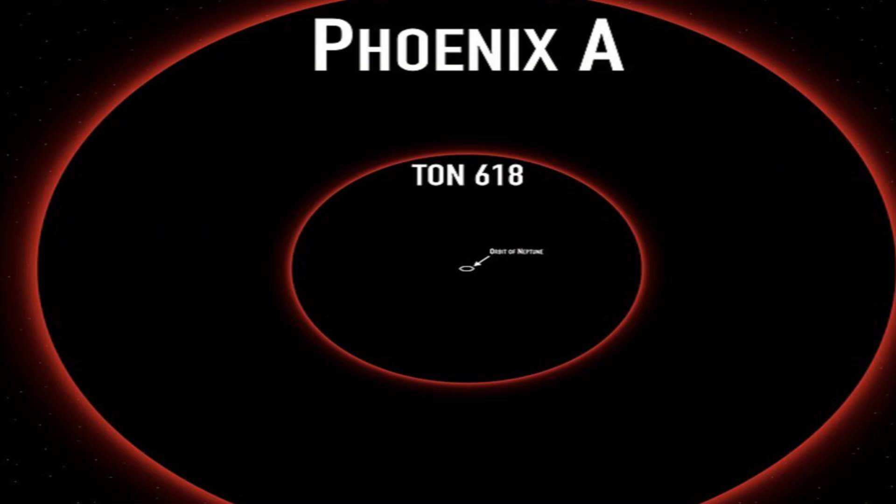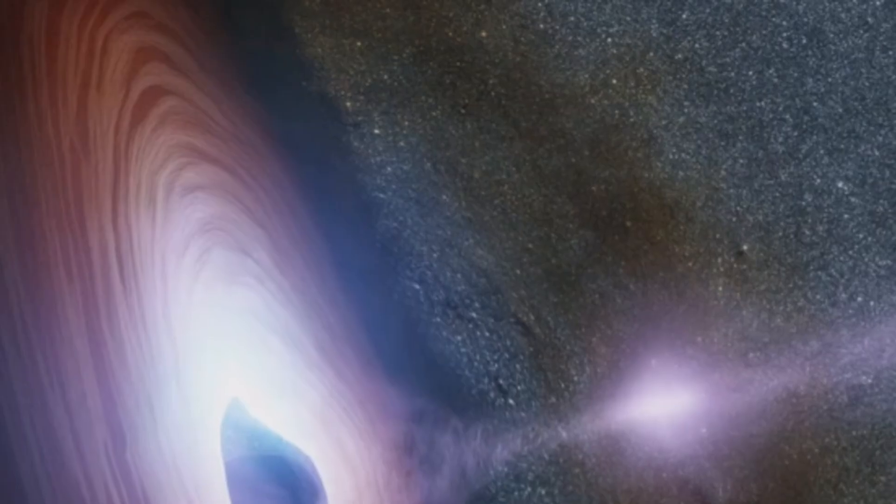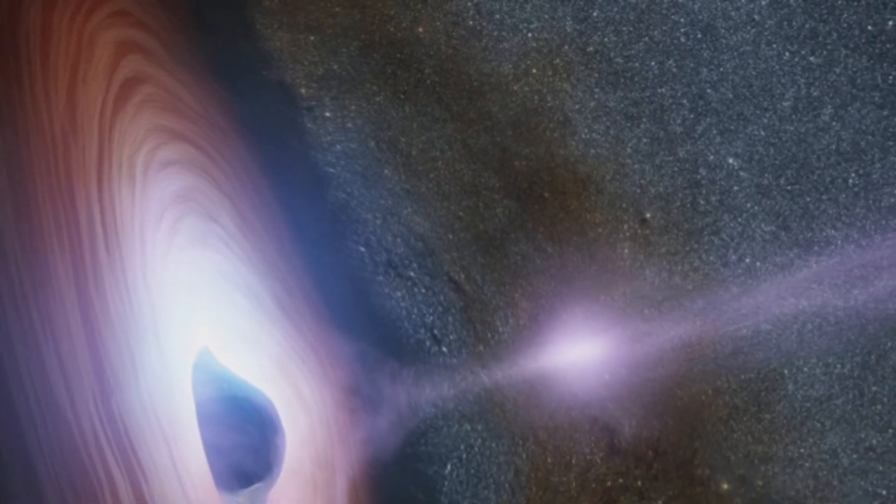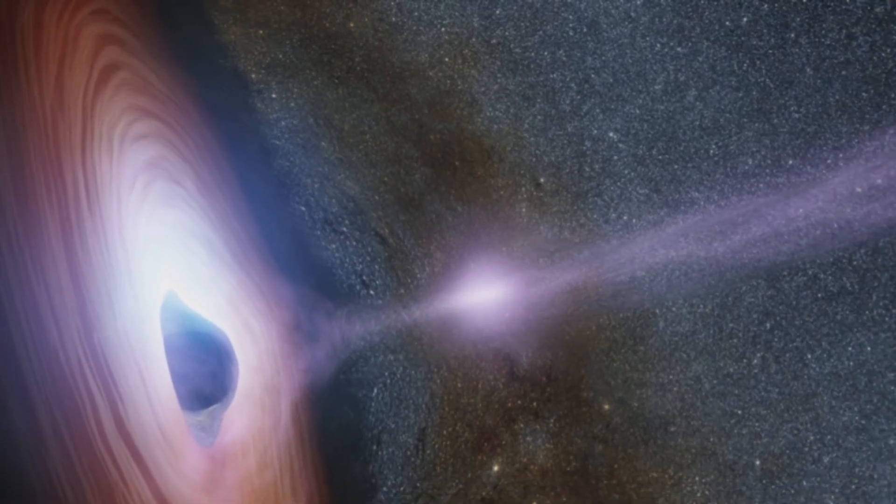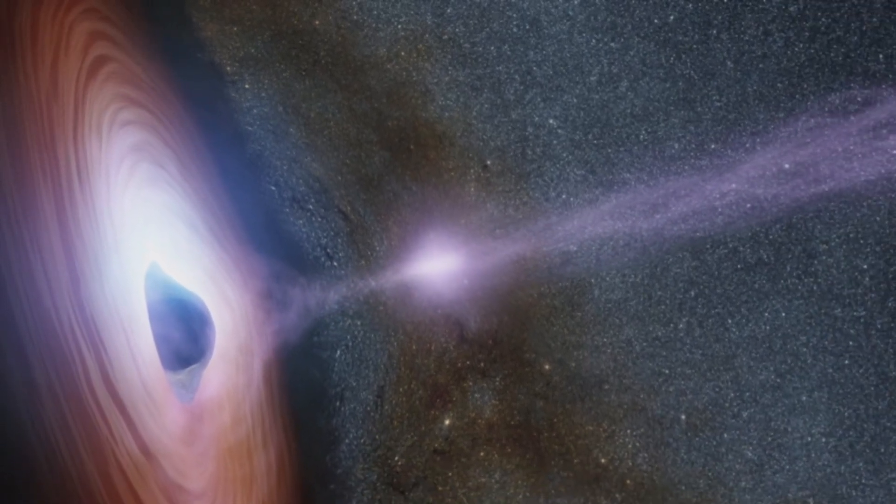This black hole, named Phoenix A, is so massive that it outweighs our Sun by an astounding 100 billion times, making it one of the largest black holes known in the universe.